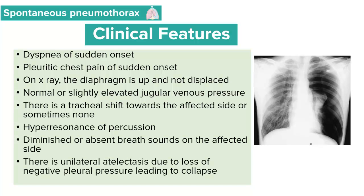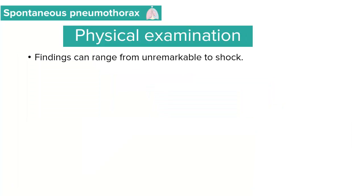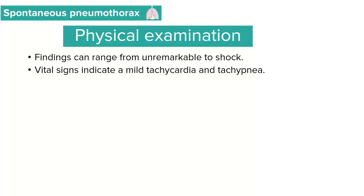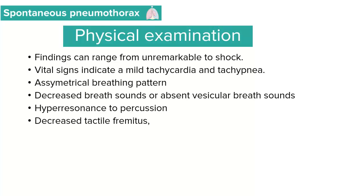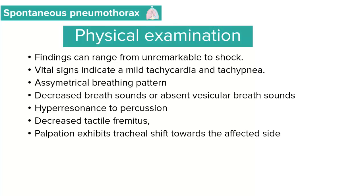There is a unilateral atelectasis which occurs because of a loss of negative pleural pressure, resulting in lung collapse. Examination findings can range from unremarkable to shock. Vital signs will indicate mild tachycardia and tachypnea in most cases. These patients will also have an asymmetrical breathing pattern. Chest auscultation reveals decreased or absent vesicular breath sounds, percussion indicates hyper-resonance of the affected lung, and there is a decreased tactile fremitus. On palpation, a tracheal shift towards the affected side may be noted.